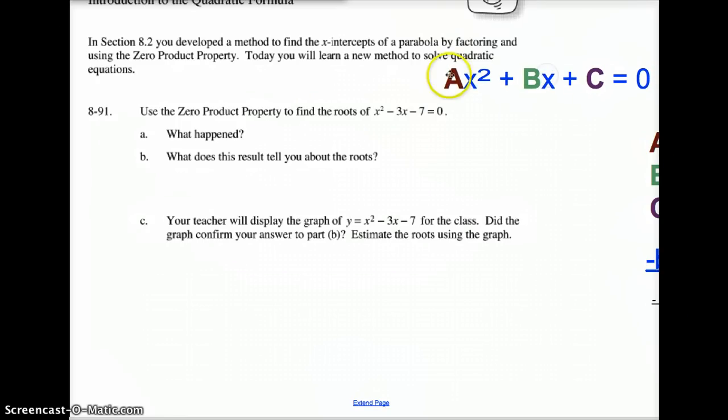So what we need are these numbers a, b, and c. Well, a right here would be 1, b would be our negative 3, and c would be our negative 7. And then we have to be able to take those numbers and plug them into our fancy formula.